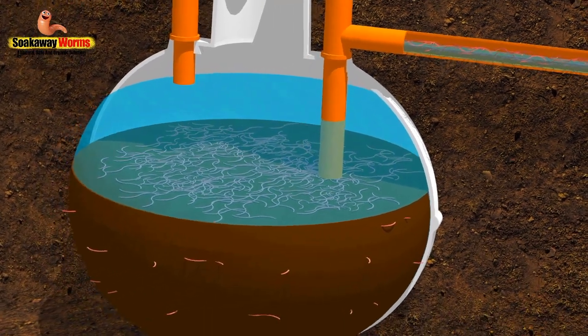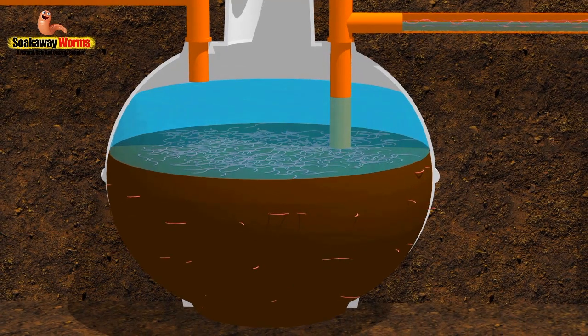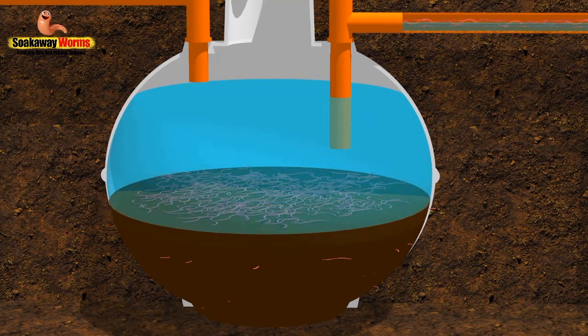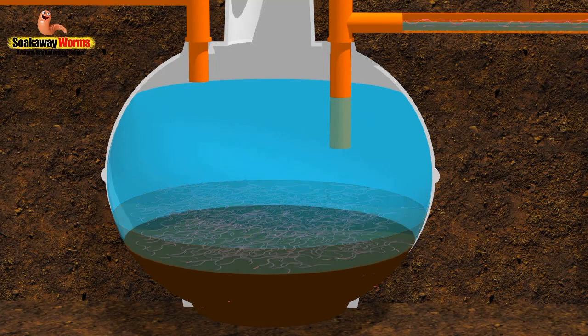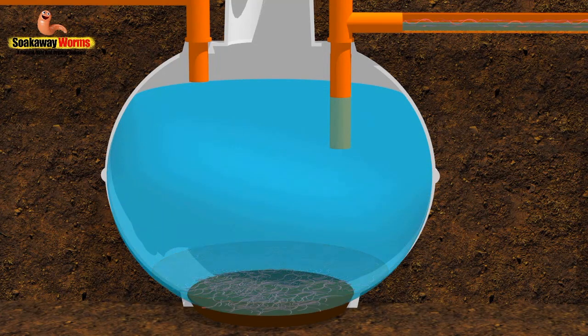Soak away worms will also save you hundreds of pounds in septic tank emptying costs. Because they eat all the fat and the grease and the sludge in the septic tank, you never need to get it emptied again because there's no sludge left to suck out.